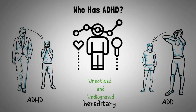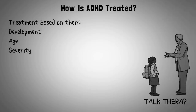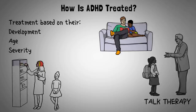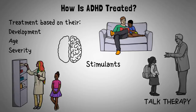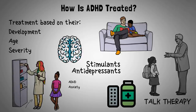How is ADHD treated? Children and adults diagnosed with ADHD may go through a variety of treatments based on their development, age, and symptom severity. Some patients can manage symptoms through talk therapy or healthy coping mechanisms that keep them on a routine. Education for parents, teachers, and others in the patient's life can also help symptoms be identified and managed at school or home. In other cases, medication may be required. Stimulants are the most common form, releasing certain neurotransmitters that work differently in people with ADHD — often producing the opposite effect compared to neurotypical people. Antidepressants and other non-stimulants may also be used.